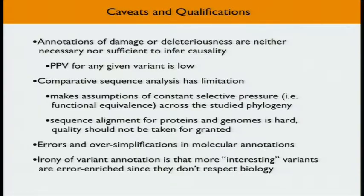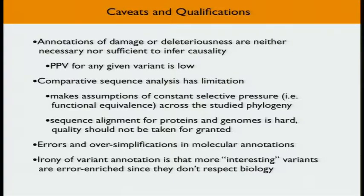There are a variety of caveats and concerns. First, annotations are neither necessary nor sufficient for causality — genetics is the first and best source of information, and annotations play a supporting role. Another issue is that the positive predictive value of annotations is low for any given variant. Saying a variant is non-synonymous or highly conserved still applies to many variants that don't do anything. It's not a single bit of information, but when used in aggregate, it can become powerful.